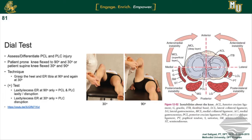For today's video we're going to be talking about the DIAL test. The DIAL test is utilized to differentiate between a posterolateral corner injury and a posterior cruciate ligament injury. There are two positions that we primarily use for this with regards to the knee: one being 90 degrees of knee flexion, the other being 30 degrees of knee flexion. And this can be done in both a supine as well as a prone position.